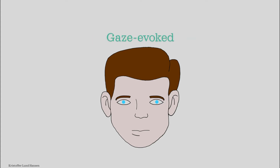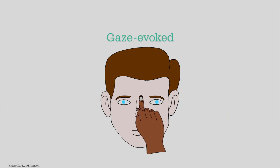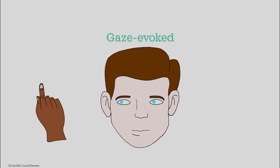Afterwards we will look at the gaze-evoked nystagmus, observing the patient's eyes when they look in different directions. Hold your finger up about half a meter from the patient's face and tell them to keep their eyes fixed on the finger. Move the finger to one side, then back towards the center and to the other side, while observing the patient's eyes for any abnormal movements.